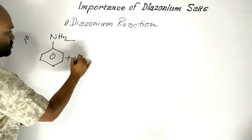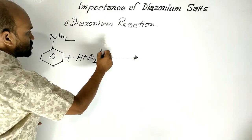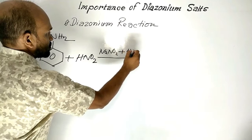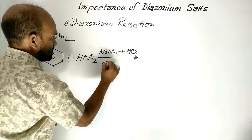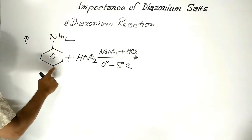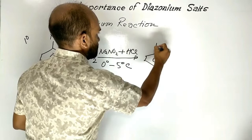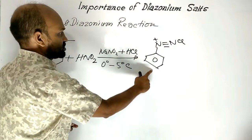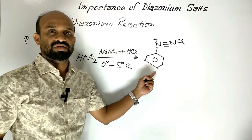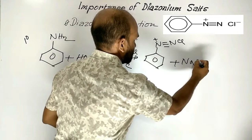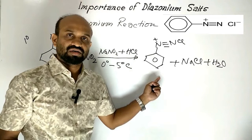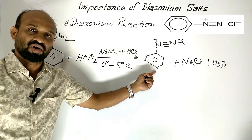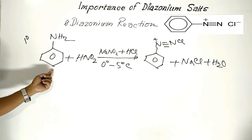When aniline is treated with nitrous acid — which is obtained from sodium nitrite salt and concentrated hydrochloric acid — and the reaction is carried out at 0°C to 5°C, then aniline converts to diazonium salt: benzene diazonium chloride. The byproducts are sodium chloride and water. This is the reaction by which benzene diazonium chloride is formed from aromatic amine or aniline.